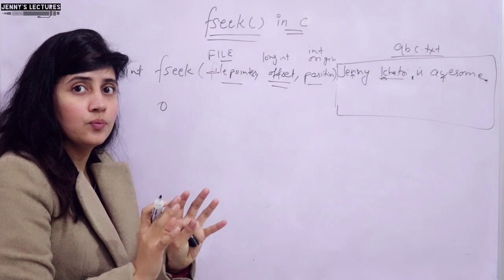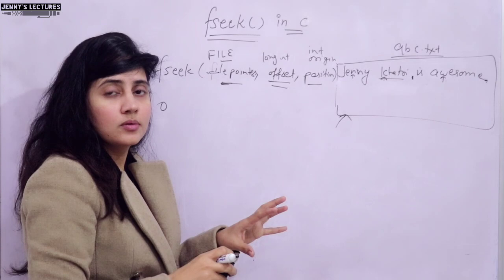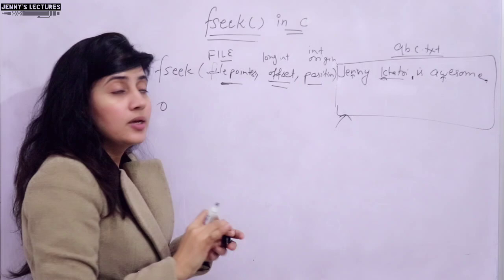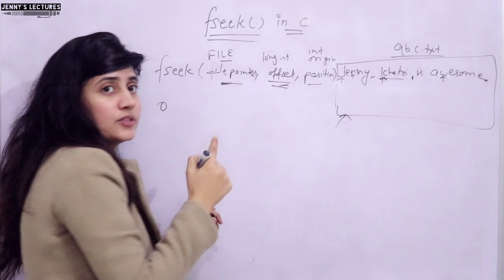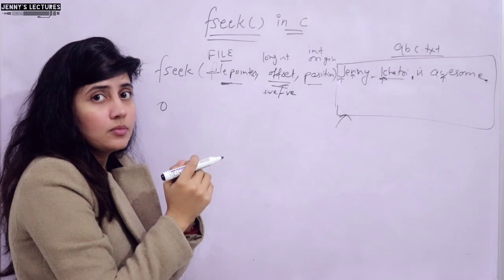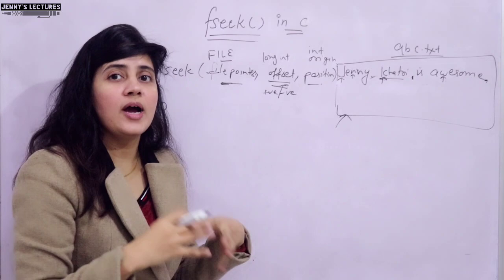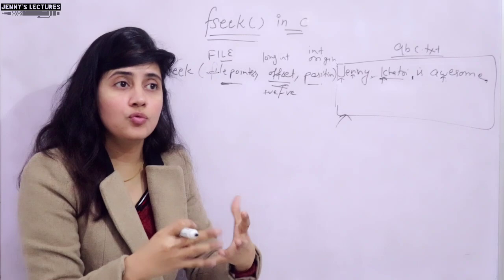The file pointer argument is the pointer pointing to your file. Offset means how many bytes you want to move the cursor from the particular position. For example, from here I want to move to 'khatri' - that is 1, 2, 3, 4, 5, 6 bytes including the space - so offset would be 6. If you want to move forward, write a positive value; if you want to move backward, write a negative value.